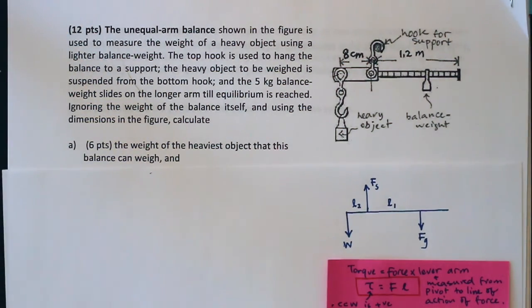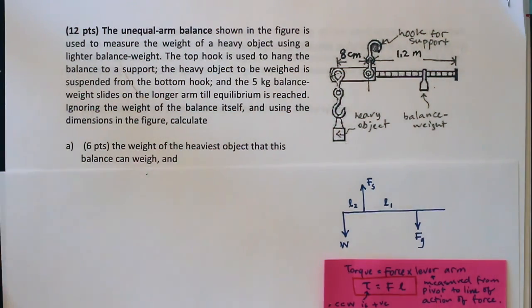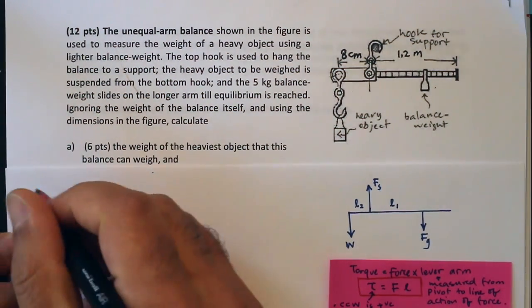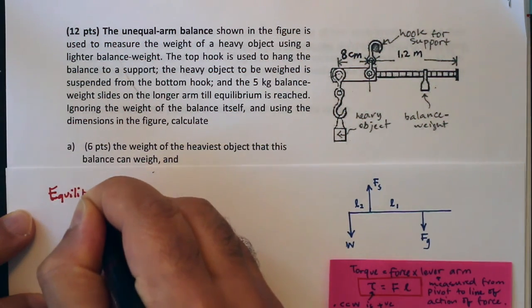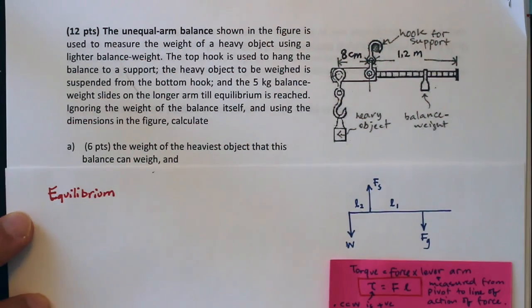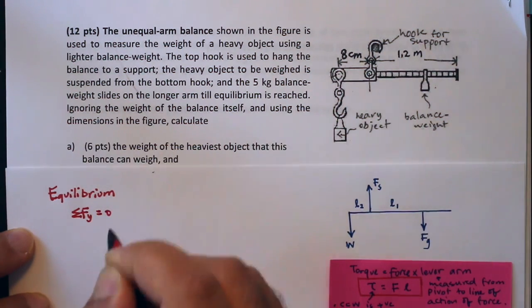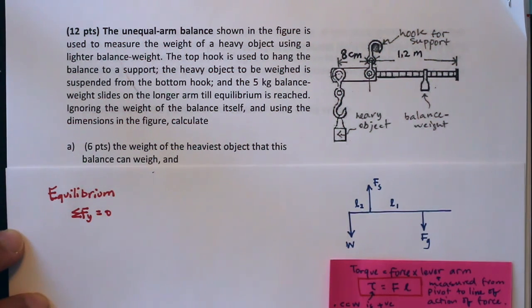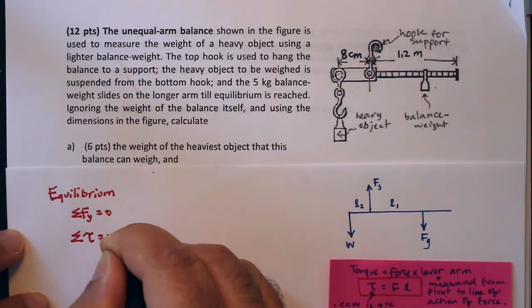But the first thing that I notice is that this thing reaches equilibrium to make the reading for the heavyweight. So in equilibrium, what I know is that if it's in equilibrium in the y direction, meaning there is no acceleration in the y direction, then the net force in y has to be equal to zero.